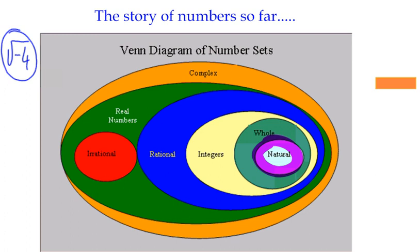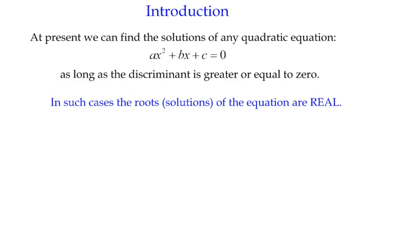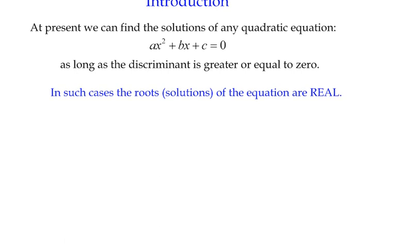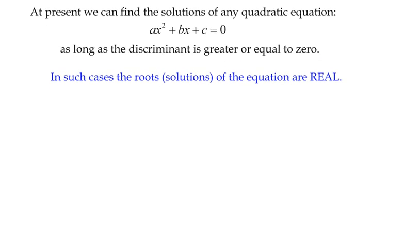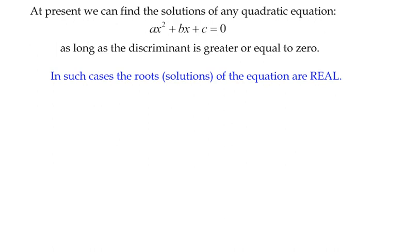So we're going to look at something that you may already know. Here we have the solutions of a quadratic equation: ax² + bx + c = 0. We can find the solutions to that quadratic equation in one of two ways. We could factorize it and solve. Or if it doesn't factorize, we could use the quadratic formula. All well and good.